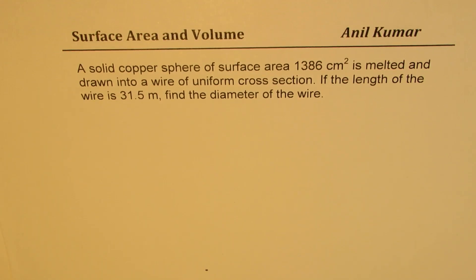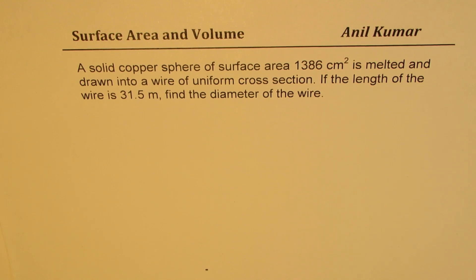I'm Anil Kumar sharing with you a very important test question based on surface area and volume. The question is: a solid copper sphere of surface area 1386 cm² is melted and drawn into a wire of uniform cross section. If the length of the wire is 31.5 meters, find the diameter of the wire. I'd like you to pause the video, answer the question, and then look into my suggestions.